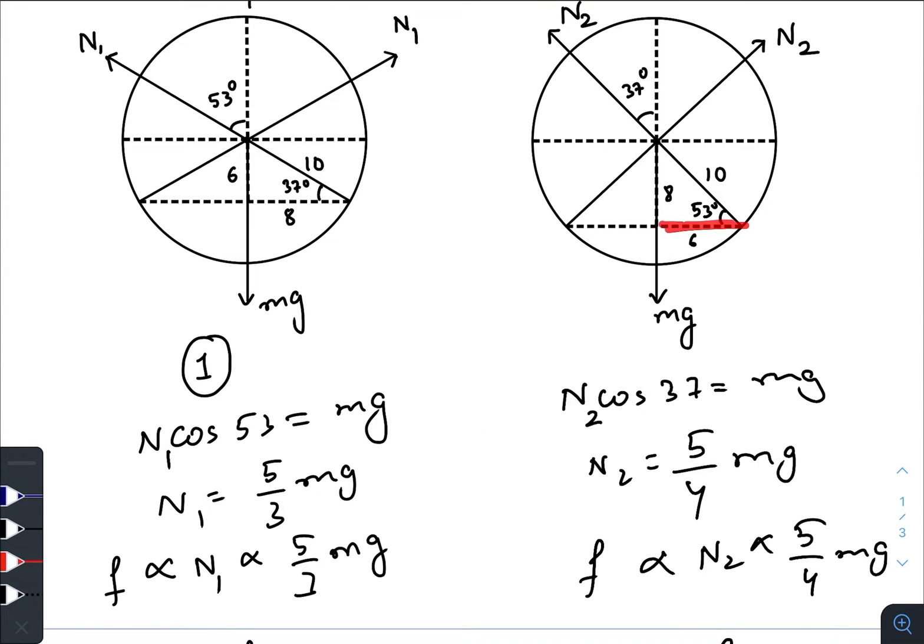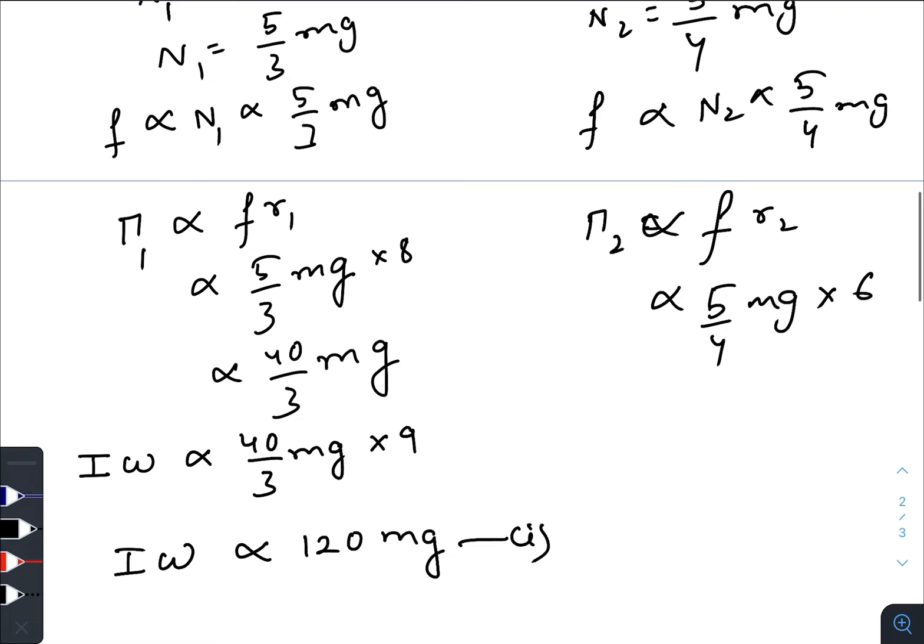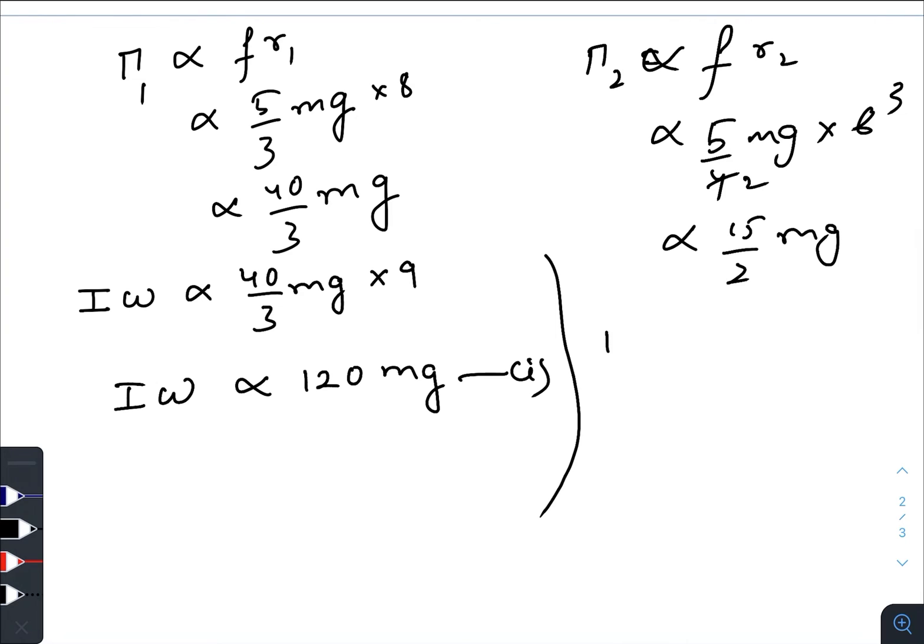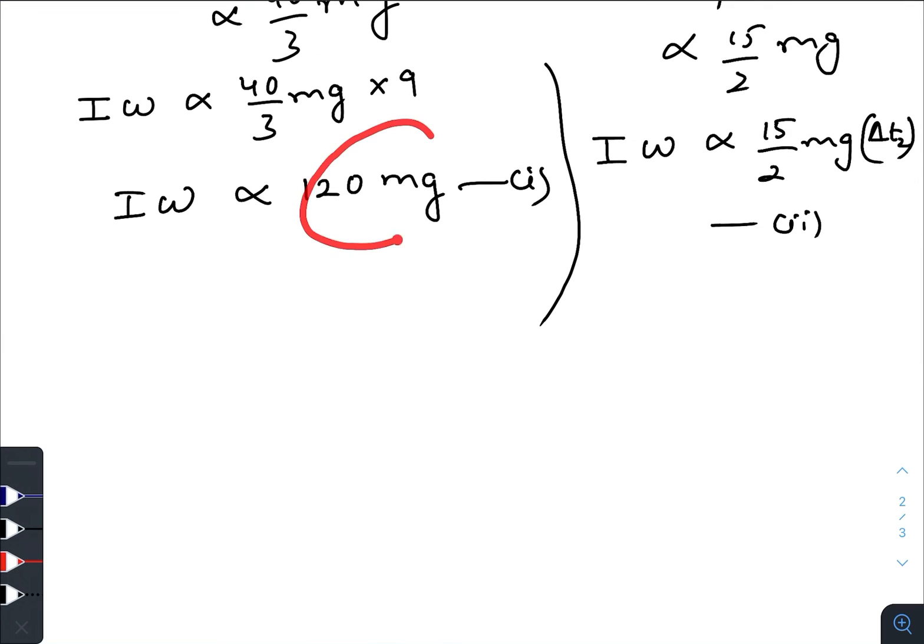So that would be directly proportional to 15/2 mg. So here the final angular momentum will become zero, initial was this one. So the change in angular momentum will be directly proportional to the torque times the interval. So this is our second equation.